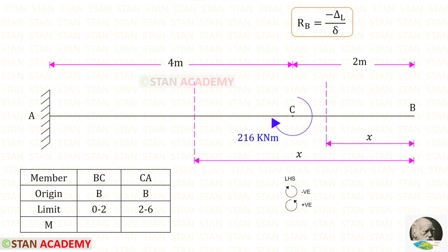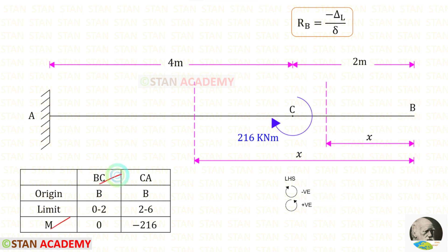Now we are going to find the moment M from point B. In this case we have to follow the left-hand side rule: clockwise will be negative and anti-clockwise will be positive. For member BC, up to the section there is no load, so the moment will be 0. For member CA, up to the section we have only the moment of 16 kNm acting in the clockwise direction, so it will be negative.